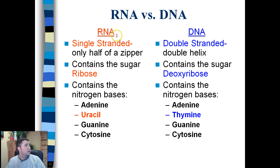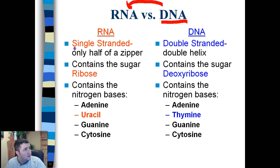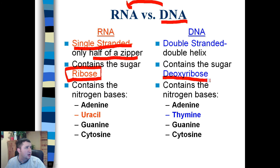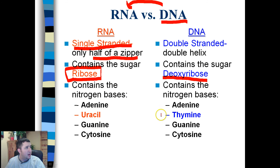The first step is taking DNA and making RNA out of it. RNA is single-stranded — like being half of the zipper — and it contains ribose instead of deoxyribose. Everything is very similar to DNA, except that RNA is single-stranded, and every time RNA is made, instead of thymine it uses a base called uracil. Other than that, everything is the same between RNA and DNA.